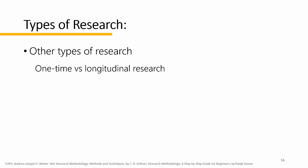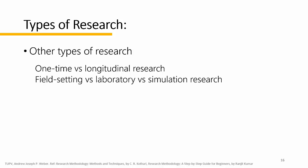Speaking of longitudinal study, the Harvard Study of Adult Development ran for 75 years and may be the longest study of adult life. The goal of the study was to identify predictors of healthy aging — a link is provided below. Research can also be classified as field setting, laboratory, or simulation research, depending upon the environment in which it is carried out.